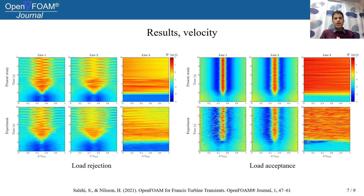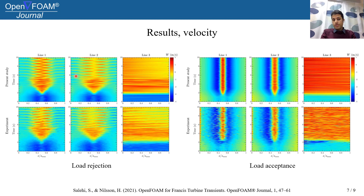Here a comparison is made for the velocity distribution in the draft tube for both numerical and experimental data. The left picture shows the load rejection and the right picture shows the load acceptance operations. The top row in both pictures shows the numerical results and the bottom row shows the experimental data, indicating a good agreement.